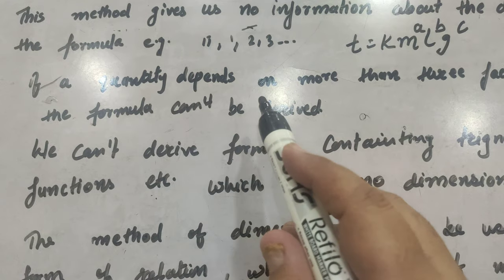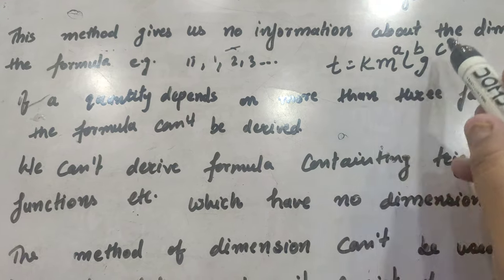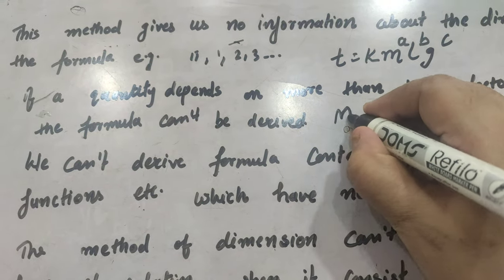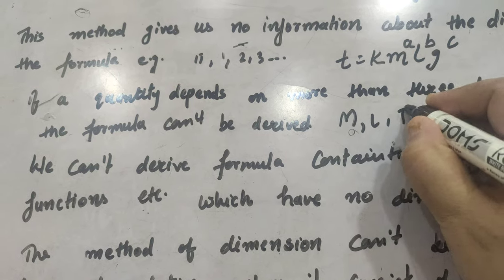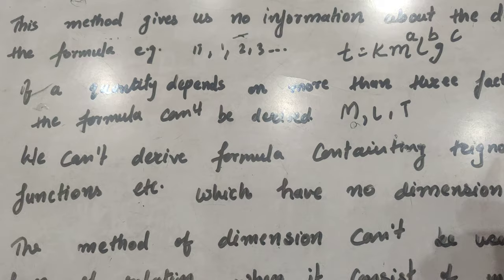Second is, if a quantity depends on more than three factors, since we know that while calculating this, we are using the dimension formulas in terms of m, l, t and then compare the powers of m, l, t on left hand side and right hand side. Now,